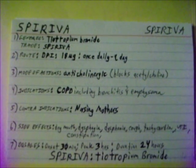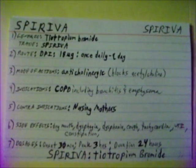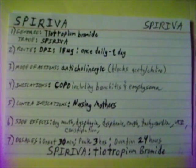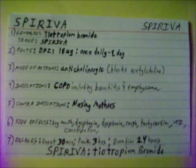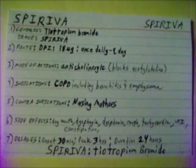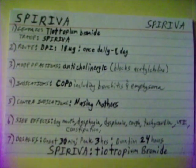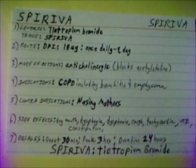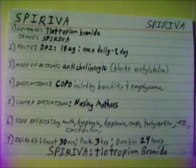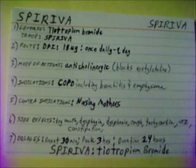Spiriva. Generic name: tiotropium bromide. Trade name: Spiriva. Given as a dry powder inhaler of 18 micrograms once daily. Mode of action: it is an anticholinergic which blocks acetylcholine. Indicated for chronic obstructive pulmonary disease — COPD.